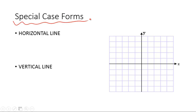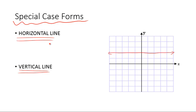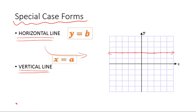We also have a couple of special cases: the horizontal line and the vertical line. A flat horizontal line — all points share the same y-value, so the equation is y equals a constant. It's good to know that if y equals a value, you'll get a flat line. Similarly, a vertical line has x equal to a constant. So if x equals 2, you'd get a vertical line.